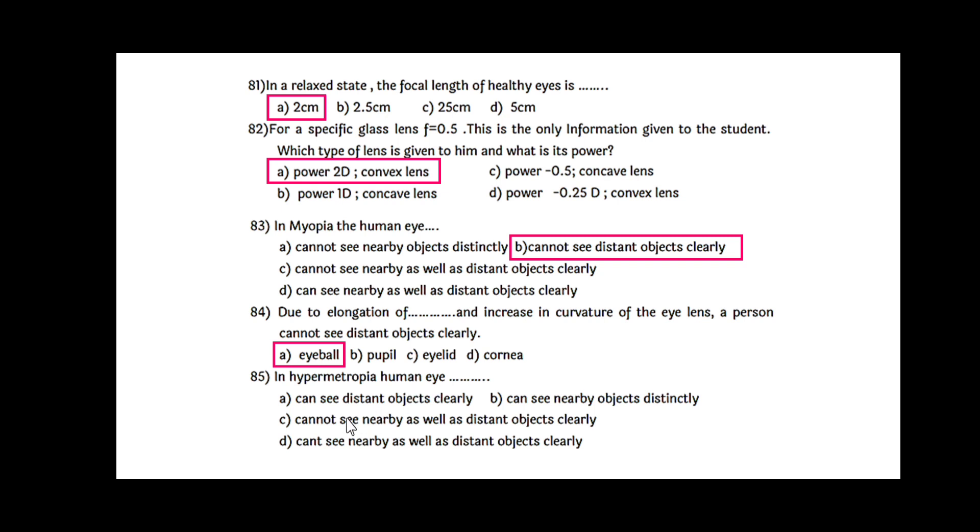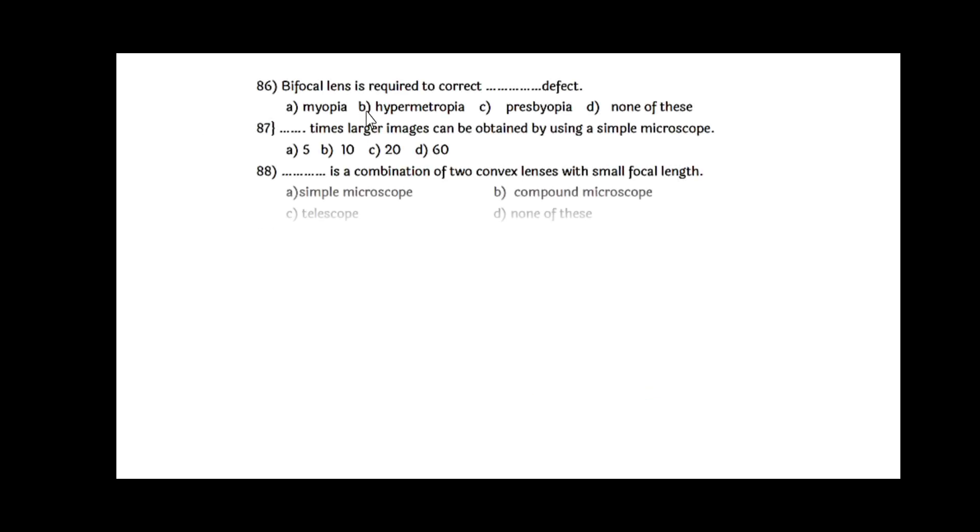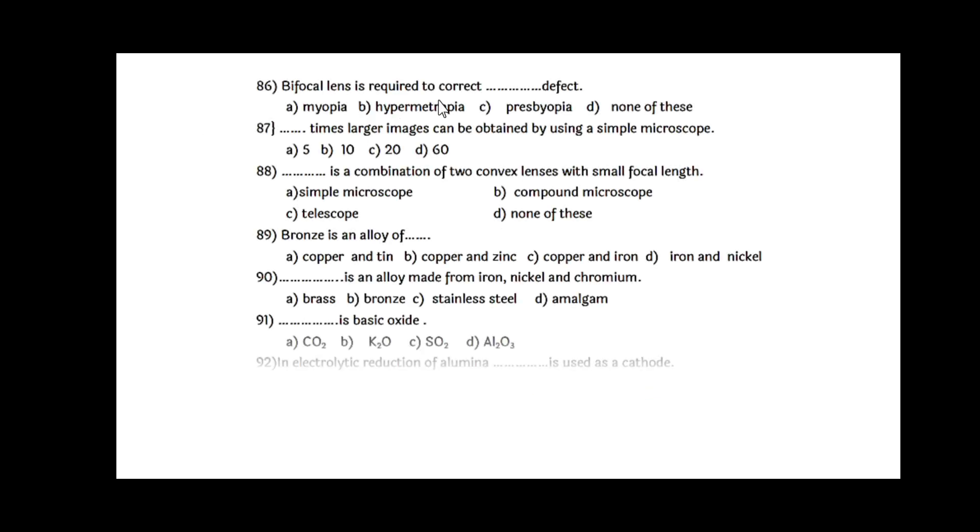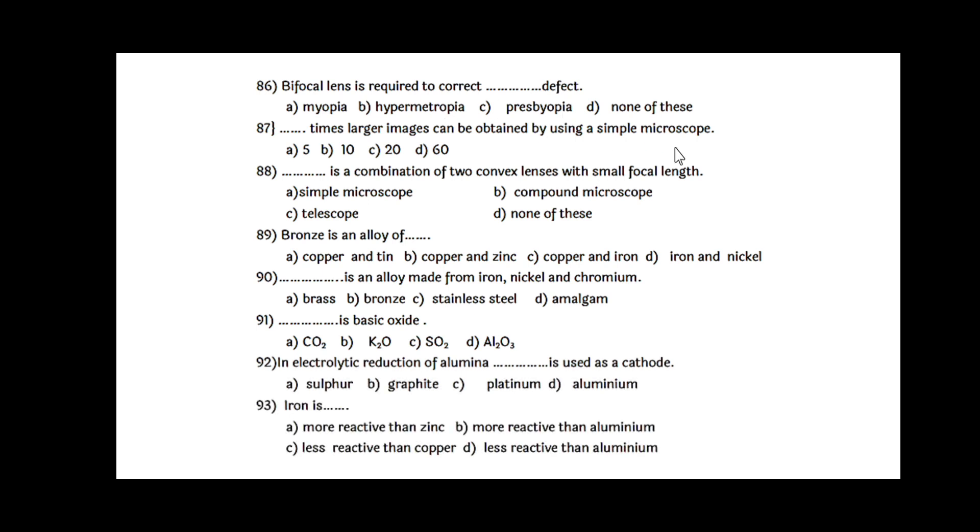In hypermetropia, human eye - here are again 4 options. Cannot see distant object clearly. This hypermetropia is also called far-sightedness. Cannot see nearby objects distinctly - not possible. Cannot see nearby as well as distant - also no. Option A is the right one. In hypermetropia, human eye can see distant objects clearly. Bifocal lens is required to correct presbyopia defect.